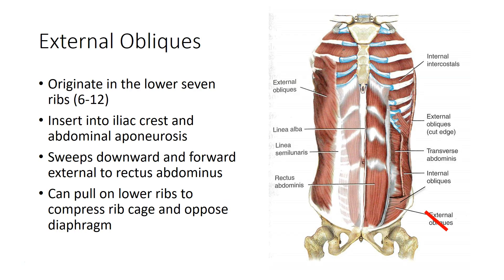The external oblique abdominis come from the lower ribs and insert into the iliac crest and the abdominal aponeurosis. Fibers for this muscle go downward and forward, external to the rectus abdominis. These muscle fibers will pull on the lower ribs to compress the rib cage and again work in opposition to the diaphragm.